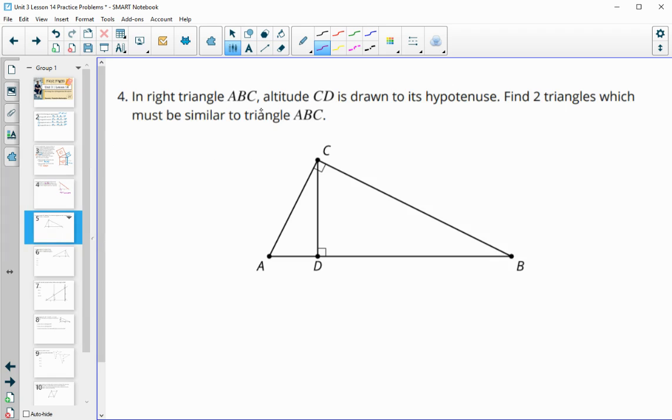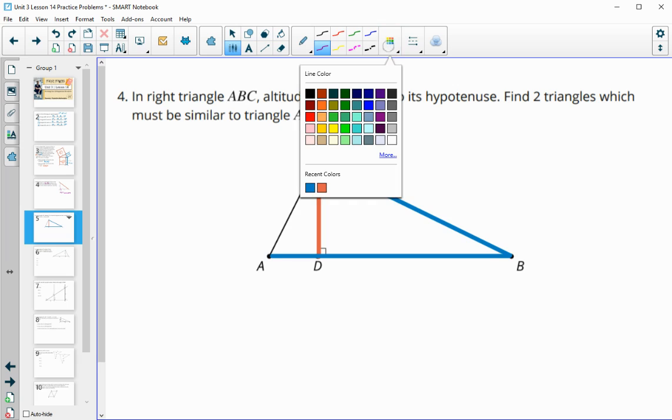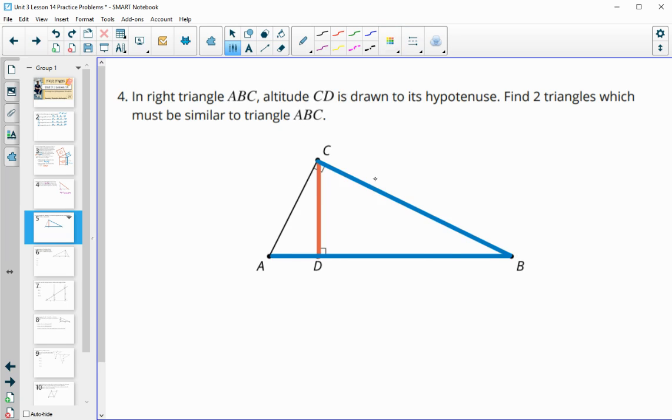Number four, in a right triangle ABC, the altitude CD is drawn to the hypotenuse. Find two triangles that must be similar to triangle ABC. So here's triangle ABC, and remember that that order matters. When we did this triangle here, we went from A to B, which is the hypotenuse, and then B to C, which is the long leg, and then we went to the short leg. So A to B to C, we need to follow the hypotenuse to the long leg in our letter orders.